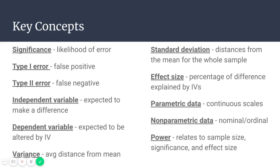Some key concepts in statistics include significance, which shows your likelihood of error. This is usually set at .05, which means you have a 95% chance that you're correct and the likelihood of error would be .05 or less. Sometimes, if you want to be more sure, you can set your significance level to .01, in which case you don't consider your results significant unless you are 99% sure that you are right.